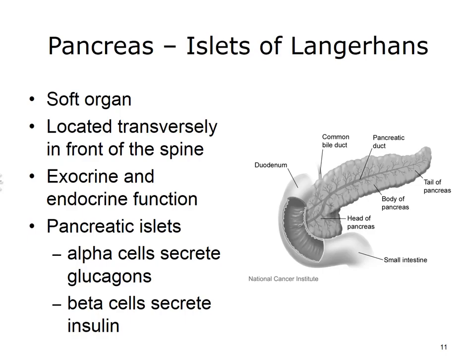More specifically, the alpha cells secrete the hormone glucagon in response to a low level of glucose in the blood. Insulin, the hormone produced by the beta cells in the pancreatic islets, is produced in response to a high level of glucose in the blood.